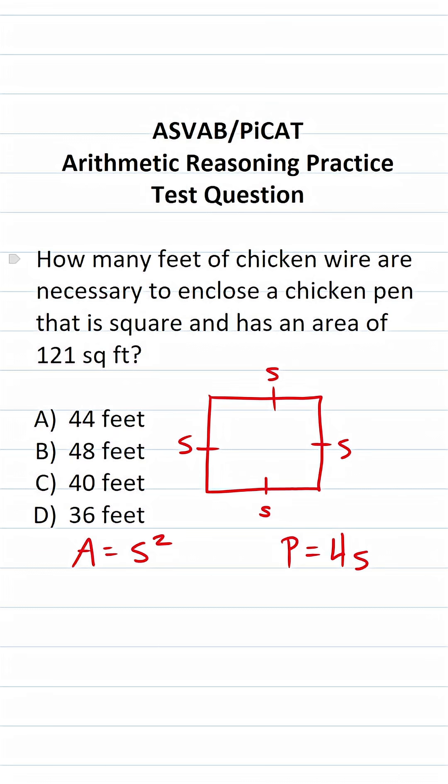In this case, we know the area of this square chicken pen is 121 square feet. So we'll replace A with 121. This becomes 121 equals S squared.